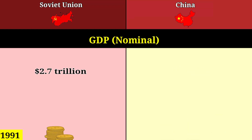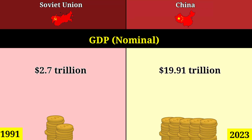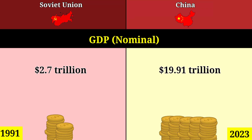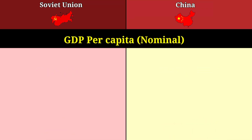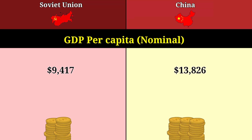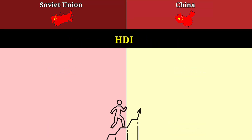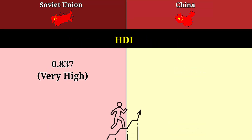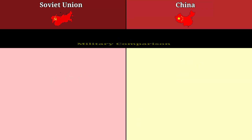GDP nominal: 2.7 trillion dollars for the Soviet Union, 19.91 trillion dollars for China. GDP per capita nominal: 9,417 dollars for the Soviet Union, 13,826 dollars for China. HDI: 0.837 very high for the Soviet Union, 0.768 high for China.